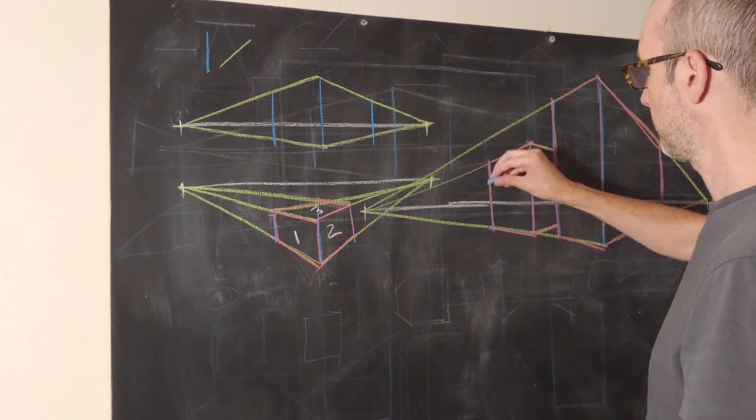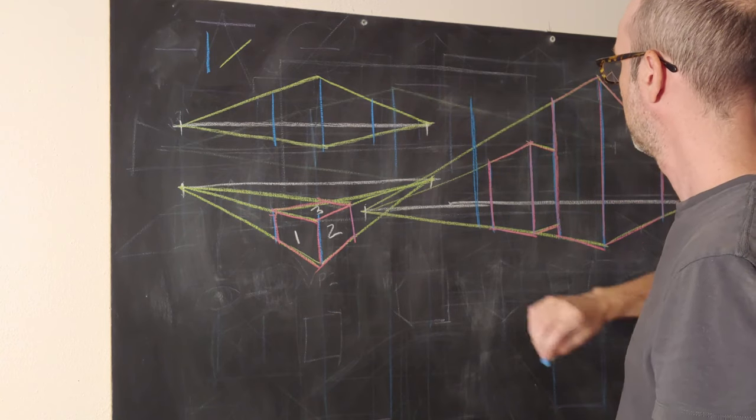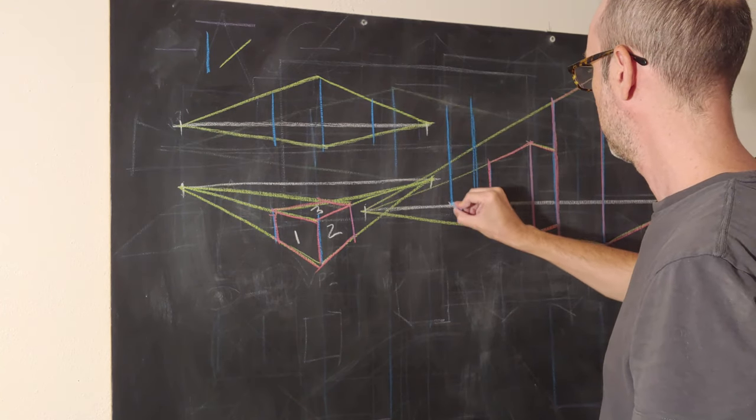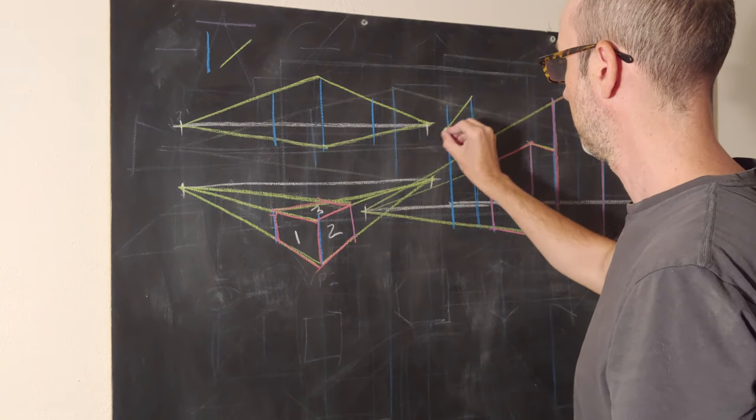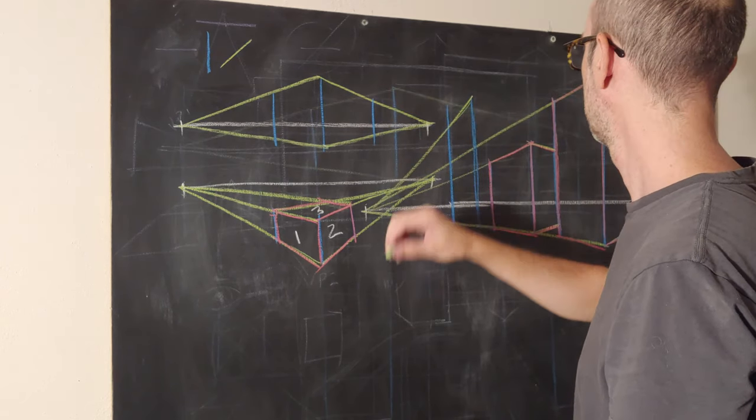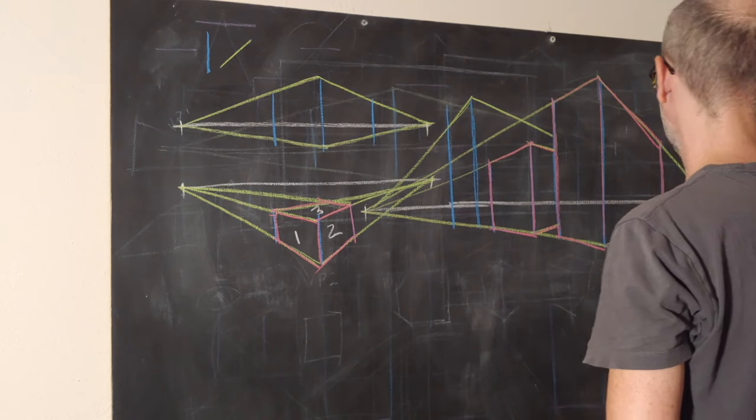And we can throw in another one. This one we'll make really tall just for the way, way, way high. Boom. Real skinny. We'll go down to the vanishing point, down towards the vanishing point until we hit another building and stop.